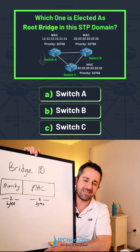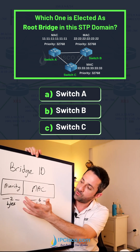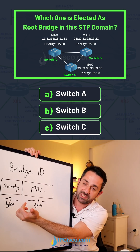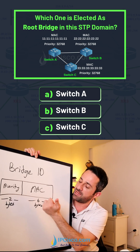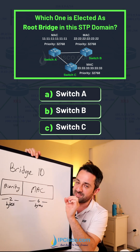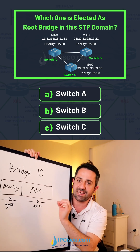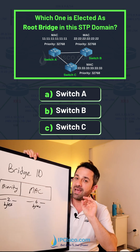A bridge ID consists of two areas: a two-byte priority area and a six-byte MAC area. The switch that has the lowest bridge ID will be elected as the STP root bridge.